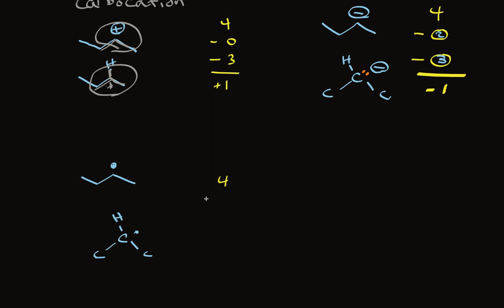And doing the formal charge calculation, four, we subtract the number of unshared electrons. It's one. We subtract the number of shared pairs, one, two, three. And we have a radical that has no charge on it.